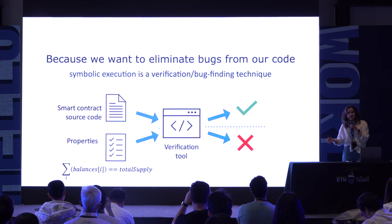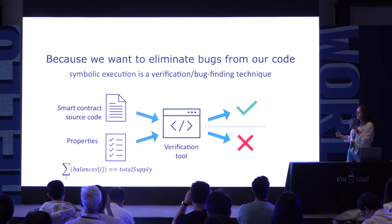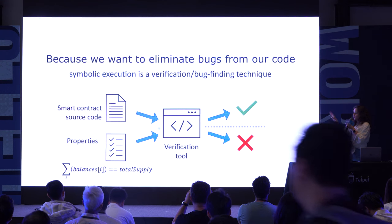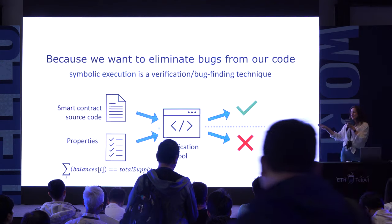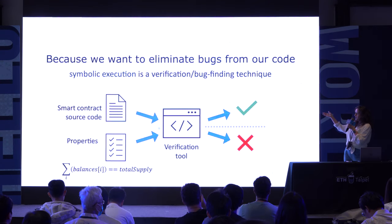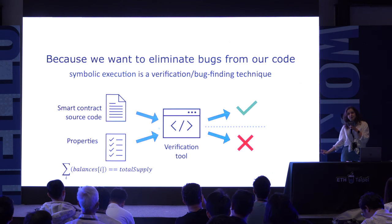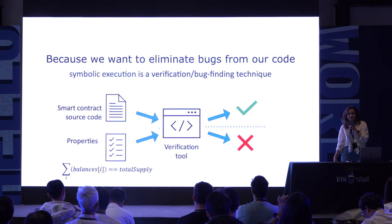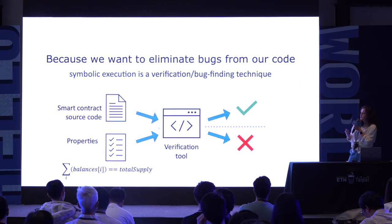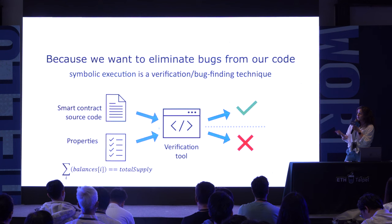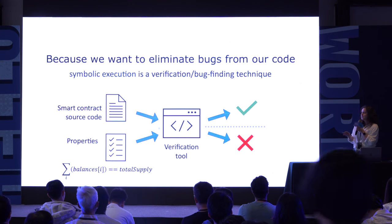We can also define a more general property stating, for example, that the contract should be free from a particular vulnerability. Once we have defined the source code and a set of properties, we can pass this information to a verification tool that uses mathematics to analyze the input and either tell us that all properties hold and the implementation looks correct, or that one of the properties is violated, indicating an issue. Symbolic execution and formal verification belong to a wide range of techniques including unit testing and fuzzing, which are more lightweight but very effective, and should definitely be part of any smart contract development process.